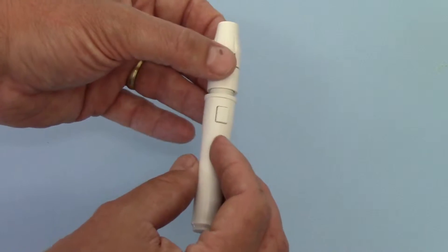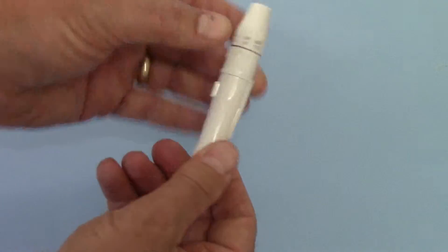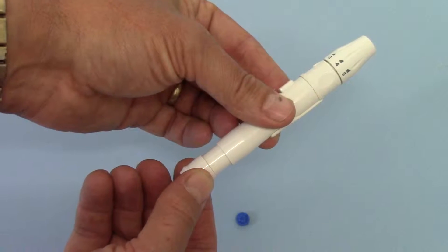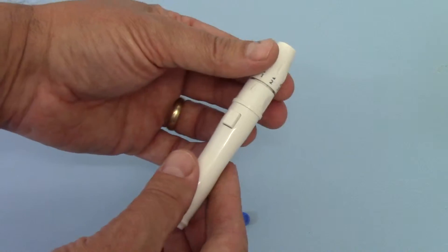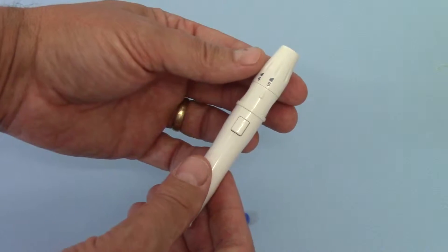So we reattach the cover just by screwing, and then to trigger the device we basically spring load it and decide on the setting to which we're going to lance. You'll see these showing integral depths up to five.